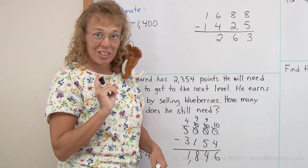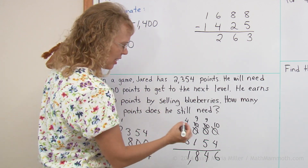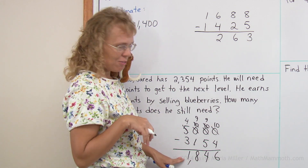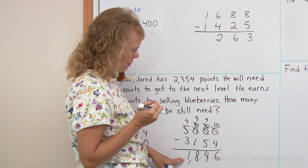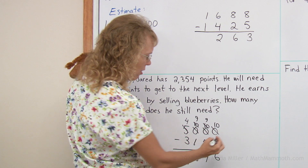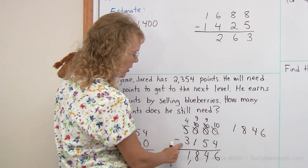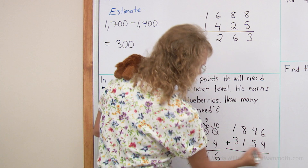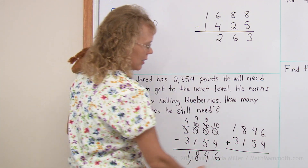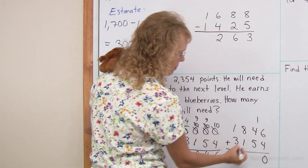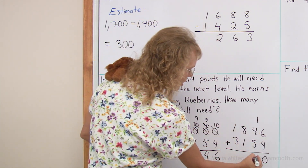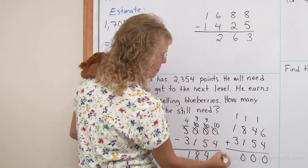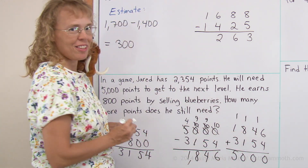Let's also check this. How do you check the answer for a subtraction problem? Take your answer 1846 and add 3154. We get 10, carry over — 10 again, 10, and 5 — 5000. All is well.